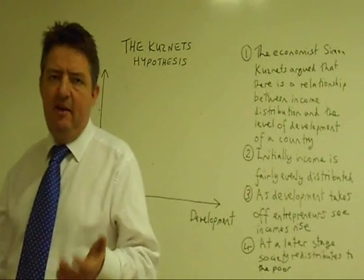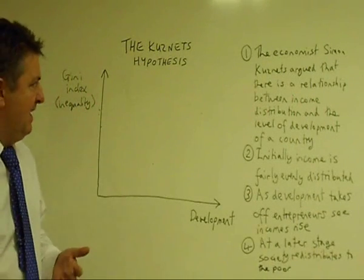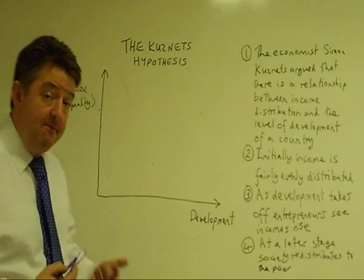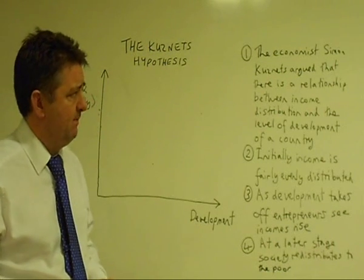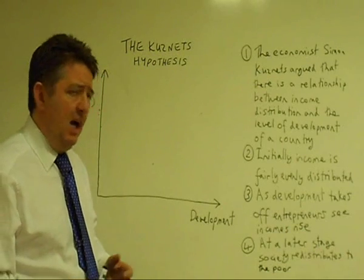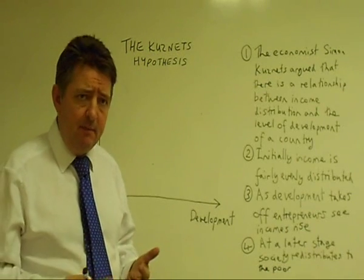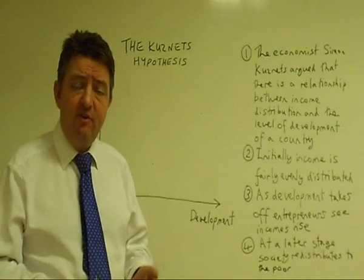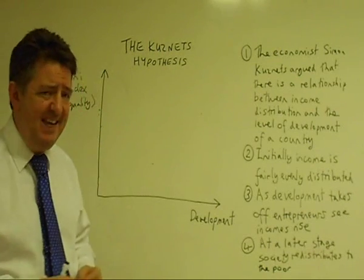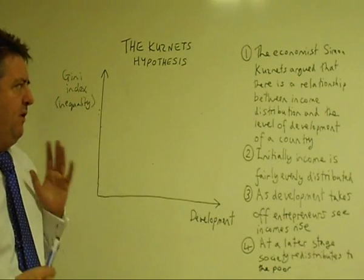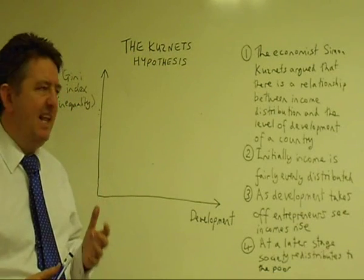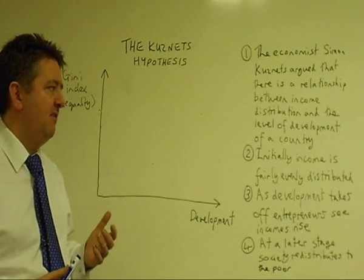The Kuznets hypothesis is a theory in development economics dealing with income inequalities in the developed and developing world. It explains how, as a country develops, there are varying levels of income inequality as measured by the Gini Index. What Kuznets is arguing is that there's a relationship between income distribution and the level of development of a country.